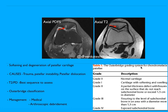What is chondromalacia patella? It is softening and degeneration of patella cartilage. The various causes include trauma, patella instability, and patella dislocation.